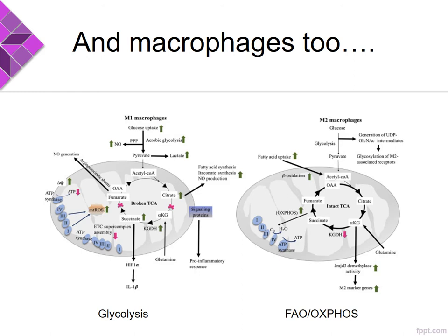Macrophages really come in two types. The M1 macrophage is responsible for host defense and relies almost exclusively on glycolysis, whereas macrophages charged with healing are M2 macrophages, and they rely on fatty acid oxidation and oxidative phosphorylation. So very different agendas that are completely dependent on that metabolic switch.